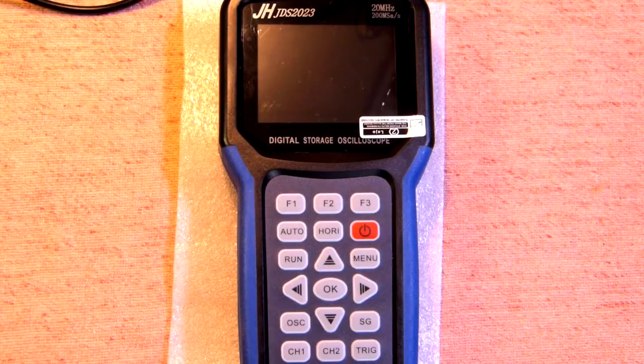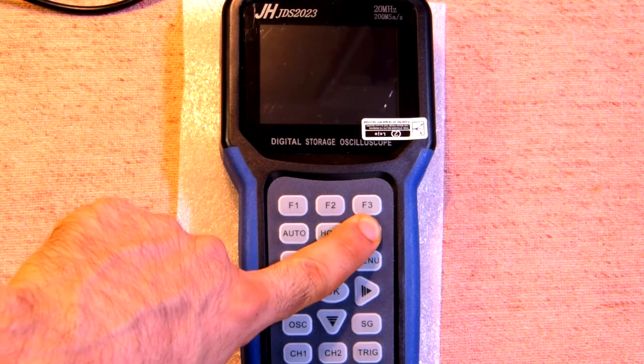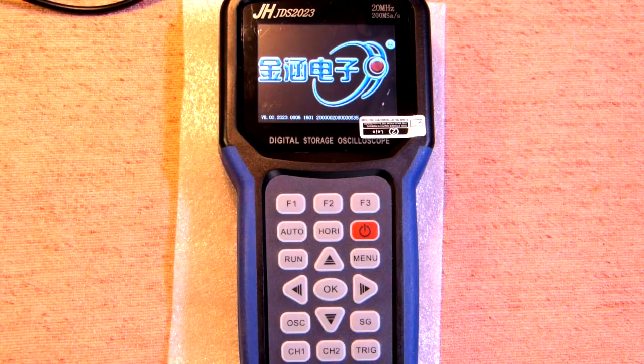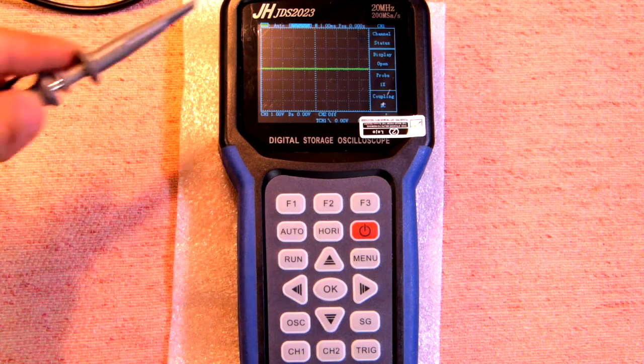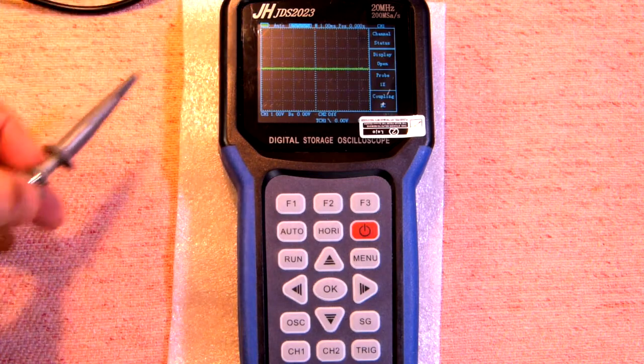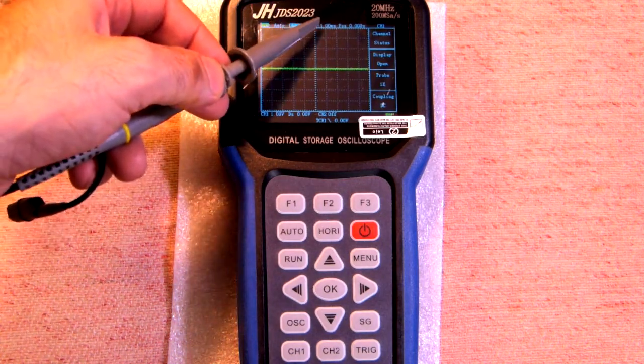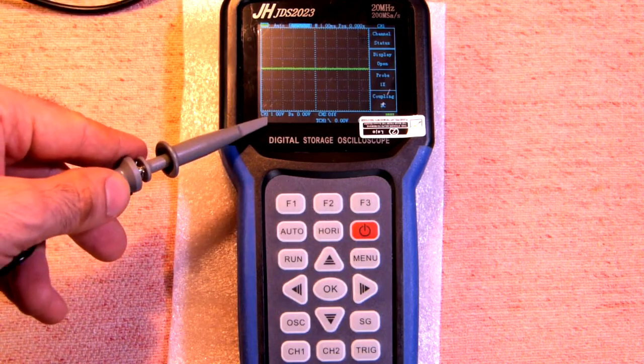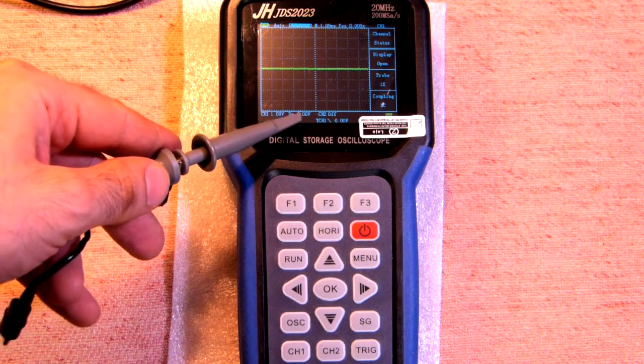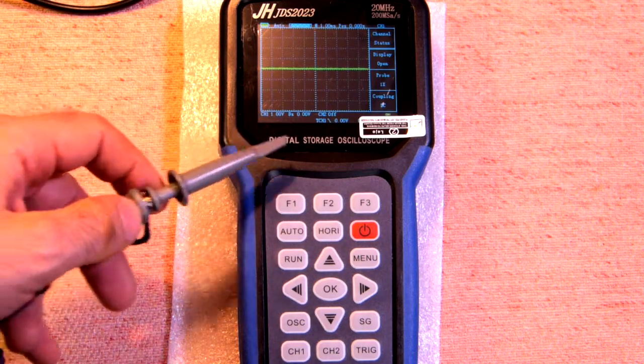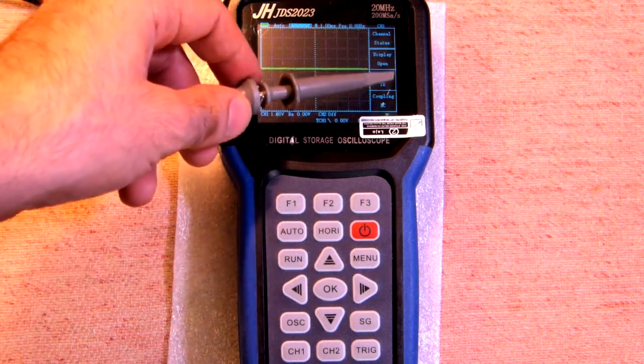Let's turn on this device. Long press and in some seconds it turns on. Here we have battery level indicator, mode auto. This is time base. Here we have one volt per division. DC offset. Channel 2 is off. And here we have functions.